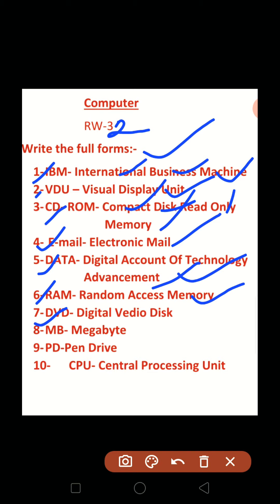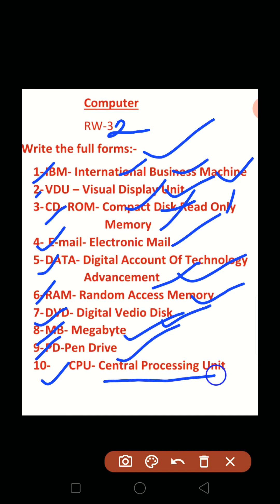Seven: DVD — Digital Video Disk. Number eight: MB — Megabyte. Nine: PD — Pen Drive. And last: CPU — Central Processing Unit.